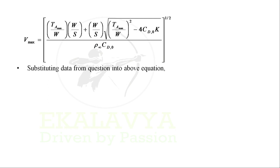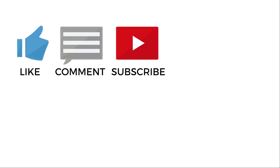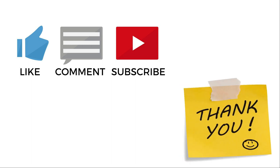Substituting the data: Tmax = 2 × 34186.79 N (two turbofan engines), W = 324720.18 N, S = 88.26 m², CD0 = 0.015, K = 0.08, and ρ∞ = 0.459037 kg/m³. Simplifying, we get Vmax = 467.71 m/s. Please do like, comment, and subscribe. We'll catch you again in the next video. Thank you.